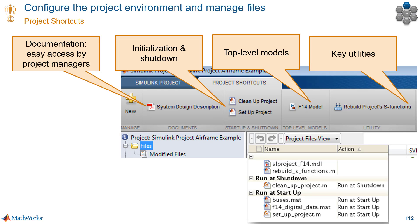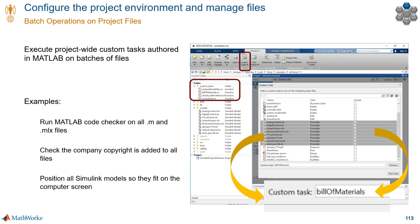If you're sharing your work with others, these shortcuts make things easy to find for everyone. Another advantage of having all your files in a project is you can run batch operations on them. That means if you make a change or check a task in multiple files, you don't have to do it one by one. You simply write some MATLAB code and run custom tasks on multiple files at the same time. Some examples include running the MATLAB code checker on all M and MLX files, or positioning all Simulink models so that they fit on the computer screen. All you do is go to custom tasks, select all the files you want to operate on, and specify the function you want to run on all those files. So that's another way projects help you be more efficient.